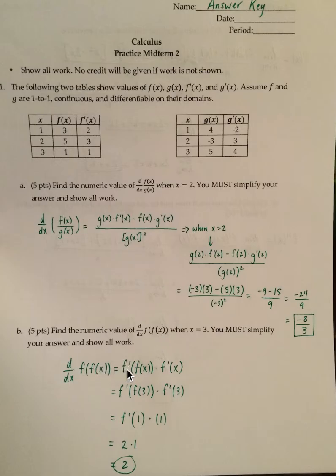So the derivative of this is going to be, remember, if you have a function inside of a function, it's going to be the derivative of the outside function. So the outside here is this outside f. So you're going to have f prime of, and then you leave the inside part alone, times the derivative of the inside part. And the derivative of the inside part here would be f prime of x. So you've got f prime of f of x times f prime of x.